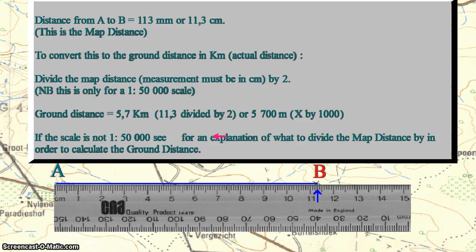The ground distance will therefore be 11.3 centimeters divided by two, which is equal to 5.7 kilometers. Remember that this method of calculation can only be used for a map with a scale of 1:50,000, and the map distance must be measured in centimeters.